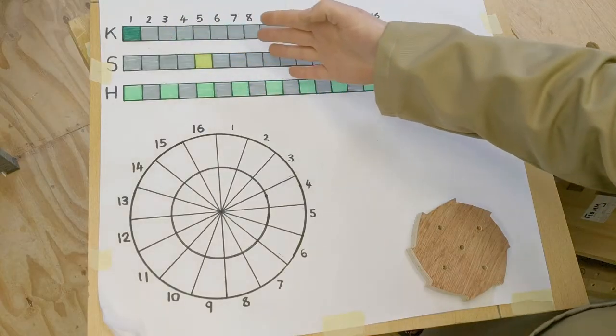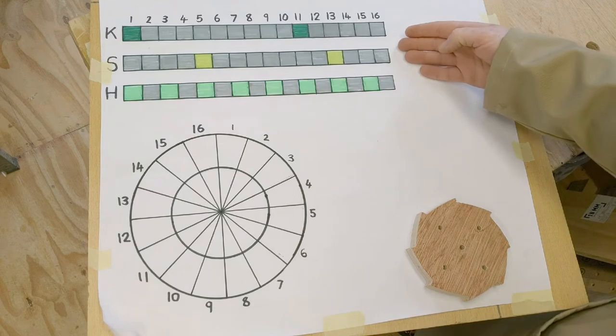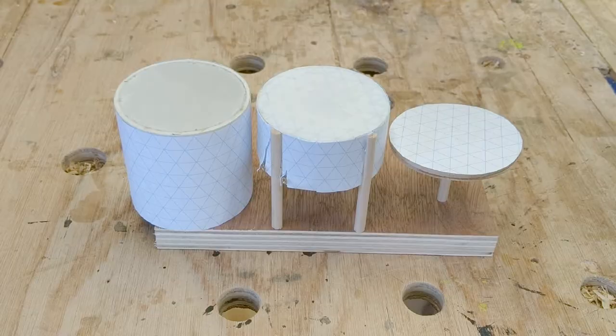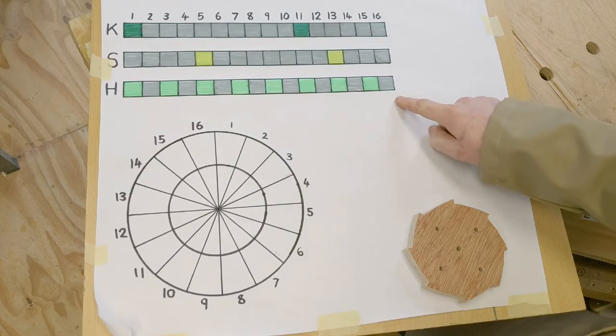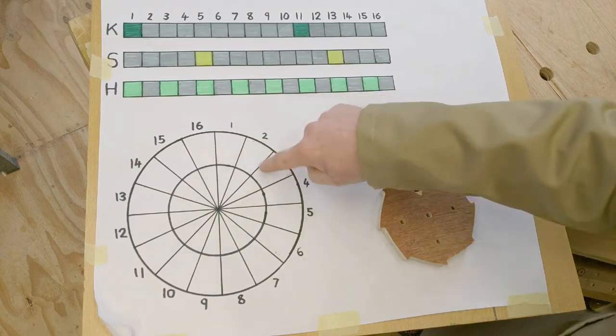This is the representation of what that drum loop should look like. It's been broken down into kick, snare and hi-hat. We have a 16 count for this one bar drum loop so our circles need to be divided into 16.